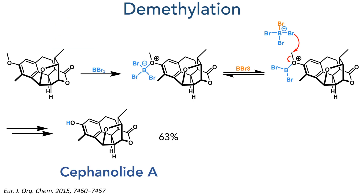With this ring now formed, a simple demethylation with boron tribromide reveals the phenolic hydroxyl group and completed the synthesis of cephanolide A with a 63% yield.